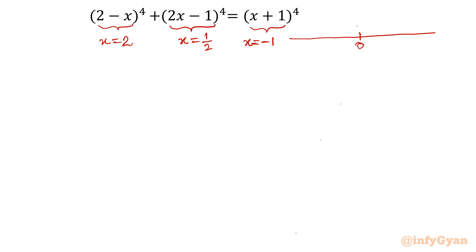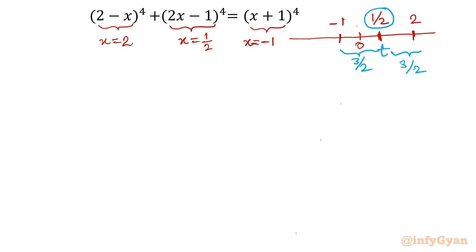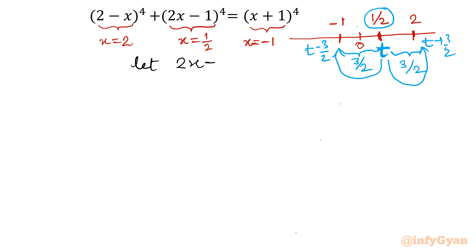Now plot these points on the number line. The gap between the first two points is 3/2, and the gap between the next two points is again 3/2. So the spacing between the points is constant. So I can write: if the half point is t, then this one would be t minus 3/2, and the other one t plus 3/2. The conclusion is: let 2x minus 1 equal to t.